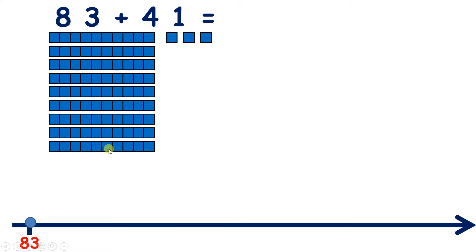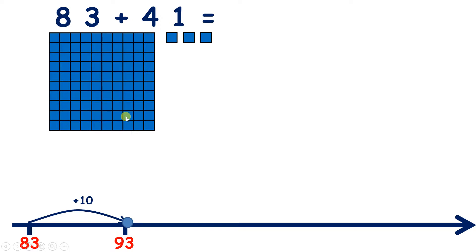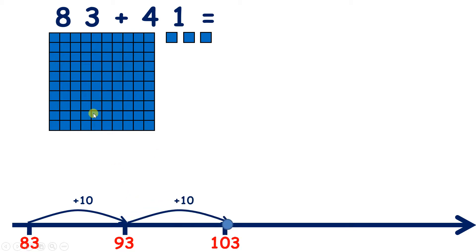If we add 10, now we have 9 tens and 3 units, so we're on 93. If we add another 10, now we have 10 tens, and we know that 10 tens is the same as 100, so we can push our tens together to form a 100 square. This is called exchanging or regrouping — we've exchanged 10 tens for 100, so now we have 103.